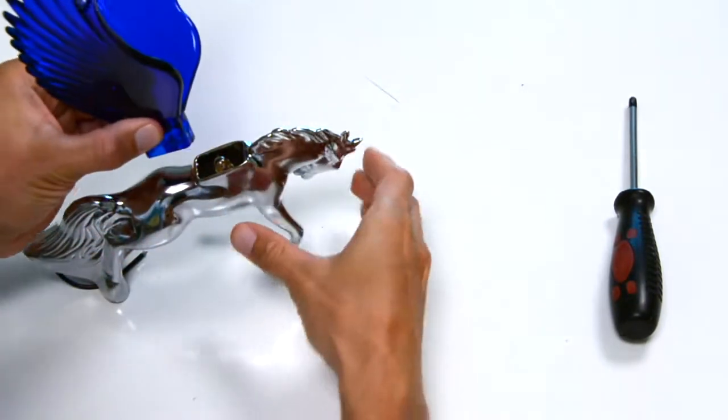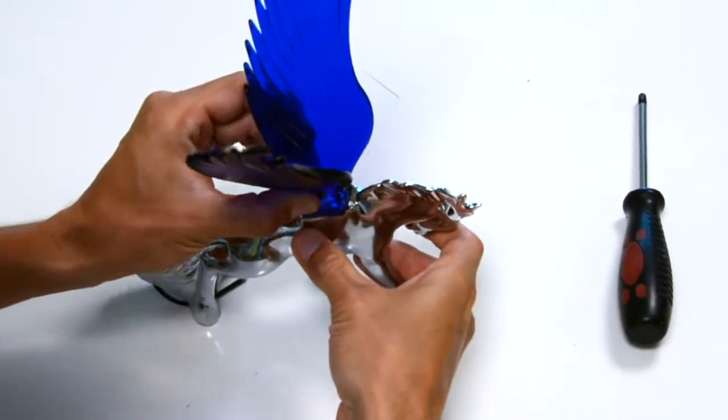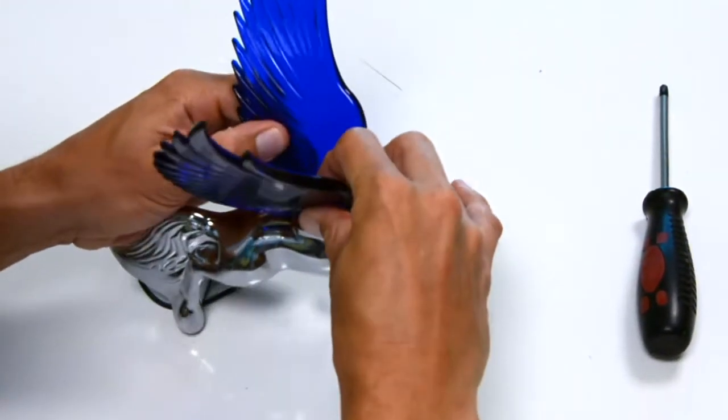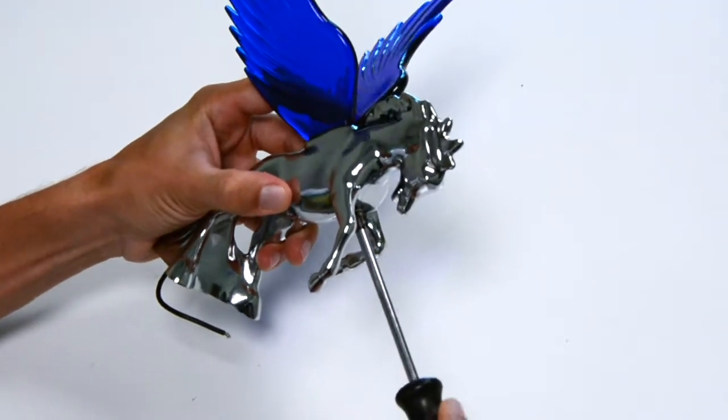Carefully slide wings over light bulb and insert into body of ornament until wings reach the bottom. Keep applying a slight pressure to the top of the wings while you locate the screw. Then tighten with the screwdriver.